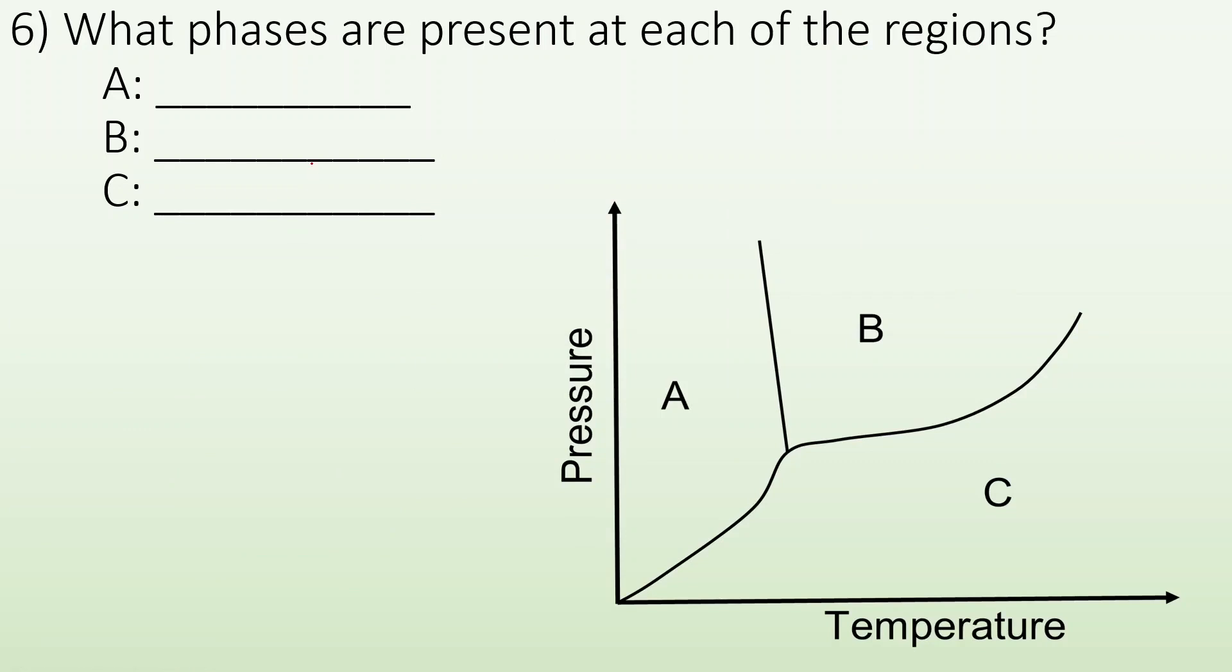Six: what phases are present at each of the regions? So again, A is where you would find the solid phase, B is where you would find the liquid phase, and C is where you find the gaseous phase. Now if I had to think through this I could go, hey, what about at low temperatures? If I'm way over here, what phase do I expect to find? You expect to find solids. If I'm at really high temperatures and low pressures, I would expect to find gas. So you could maybe still think through this.